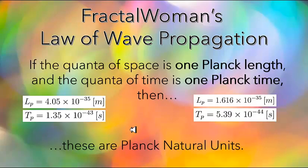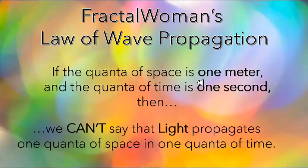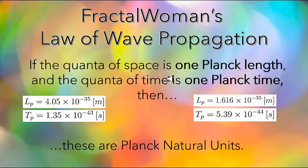There's still a problem here, because 10 to the minus 35 is a very small number, and 10 to the minus 43 is also a very small number. So in terms of a measuring system useful at the human scale, these values are not very practical. We're kind of stuck with the unnatural units of the meter and the second, although these are not natural units. These units are much easier to use at the human scale and are more useful when playing around with equations when you don't really care about the final calculated value.